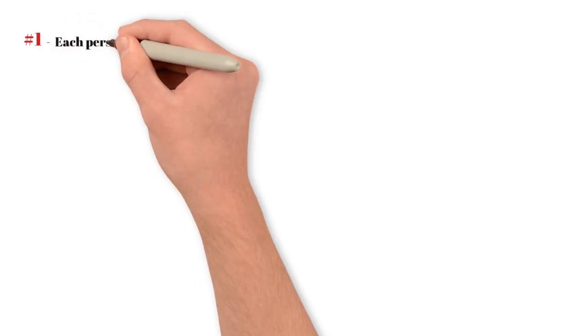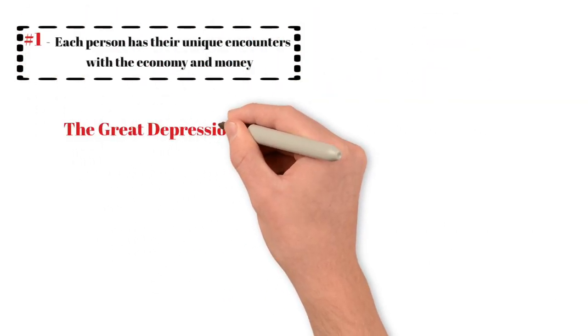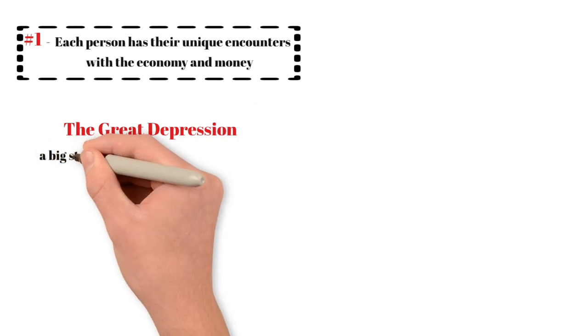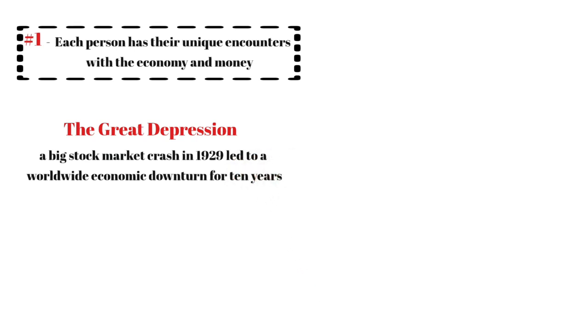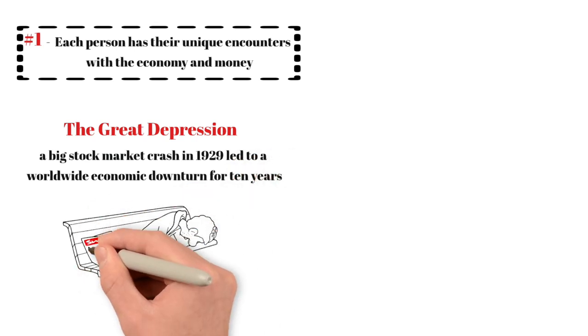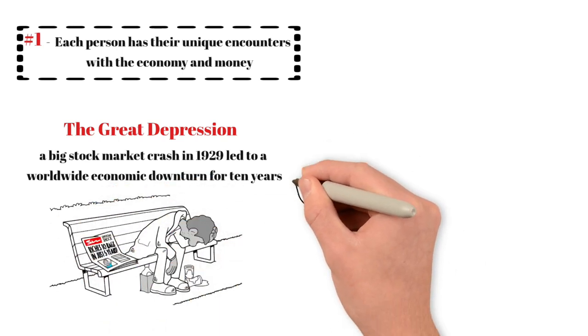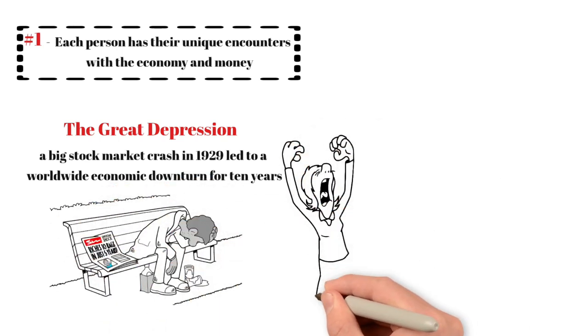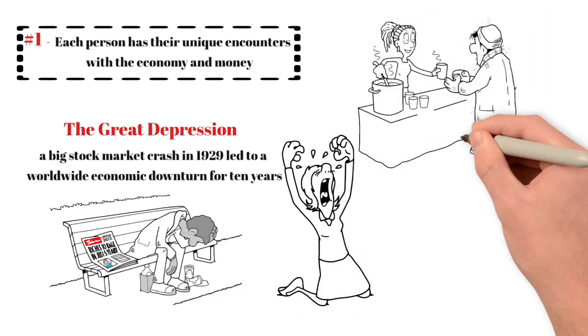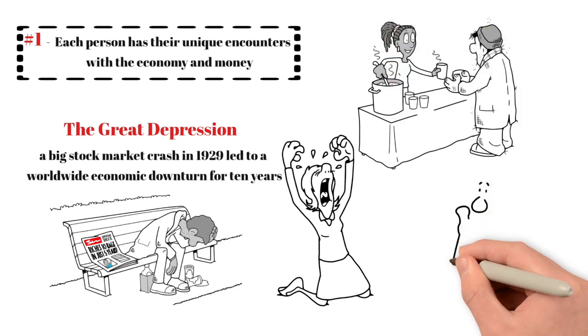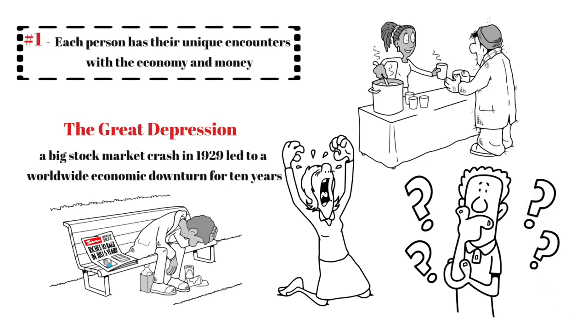Number one: Each person has their unique encounters with the economy and money. The Great Depression is a familiar story. A big stock market crash in 1929 led to a worldwide economic downturn for 10 years. In the U.S., the prosperous roaring 20s suddenly ended. Businesses closed, families lost homes, and savings vanished. Poverty and unemployment shot up, and people lost hope for a better future.